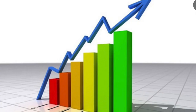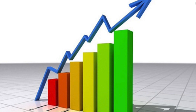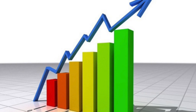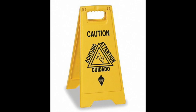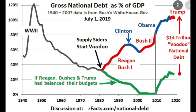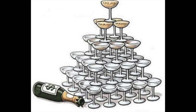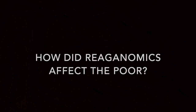Did Reaganomics work? The answer is complicated. The economic principles the Reagan administration applied did lower inflation and unemployment rates, from 8.9% to 4.9%, and from 7.6% to 5.3%, respectively. America escaped the recession of the 70s, and its GDP increased by 77%. However, Reagan was not successful in balancing the budget. His overwhelming defense spending increased national debt by 188%. Also, and more importantly, the efficacy of Reaganomics in benefiting the whole of America was called into question.